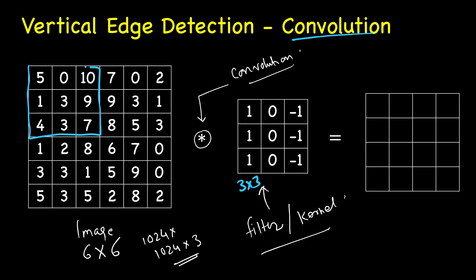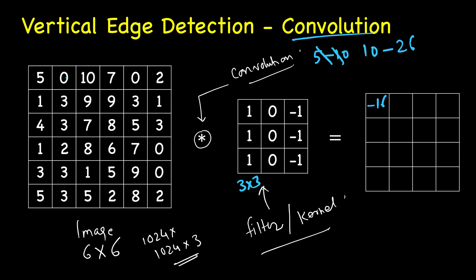To perform convolution, we overlap the 3×3 filter on top of the image starting from the top left. We do element-wise multiplication and then add everything. The left column is multiplied by +1, the right column by -1, and the middle column by 0 — so we add the left three values and subtract the right three. For example, computing the first output element gives us a value of -16.